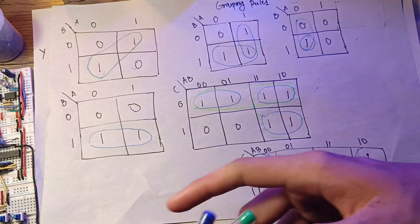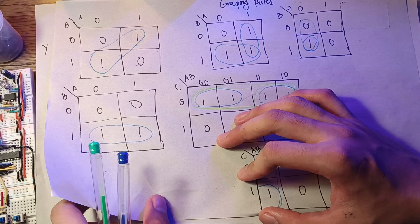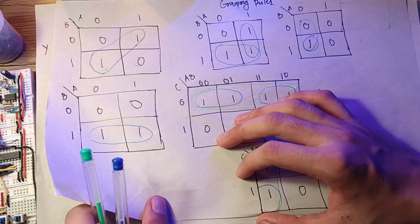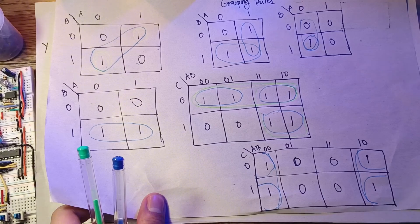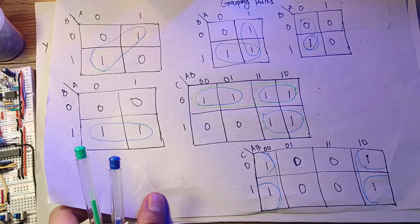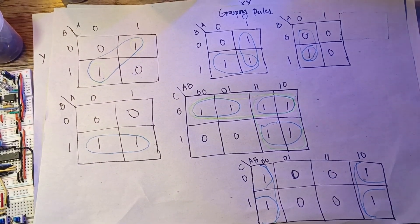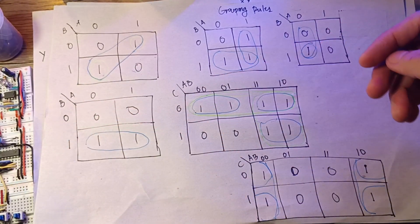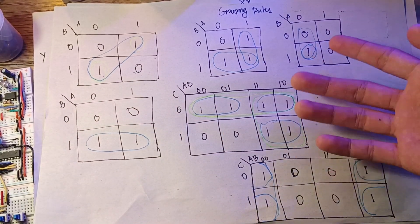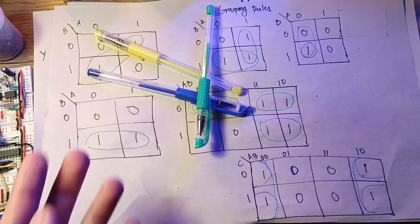Those are the grouping rules of the Karnaugh map. In the next video, we will try applying this to a decoder design, grouping our decoder so we can see the Boolean expression and construct our circuit. That would be all for this video — see you on the next one. Thank you.